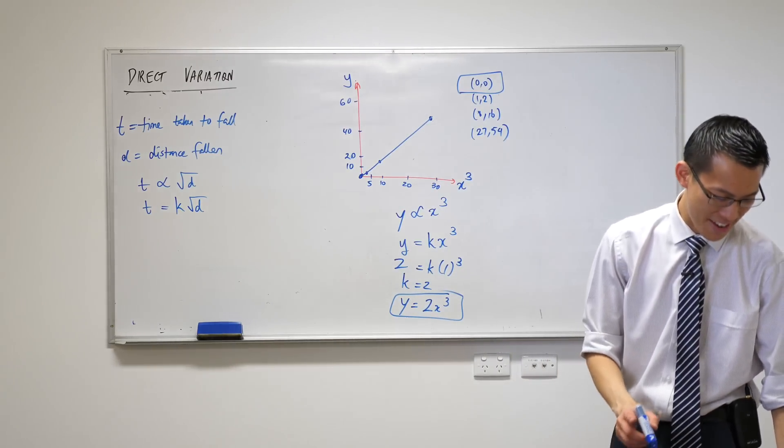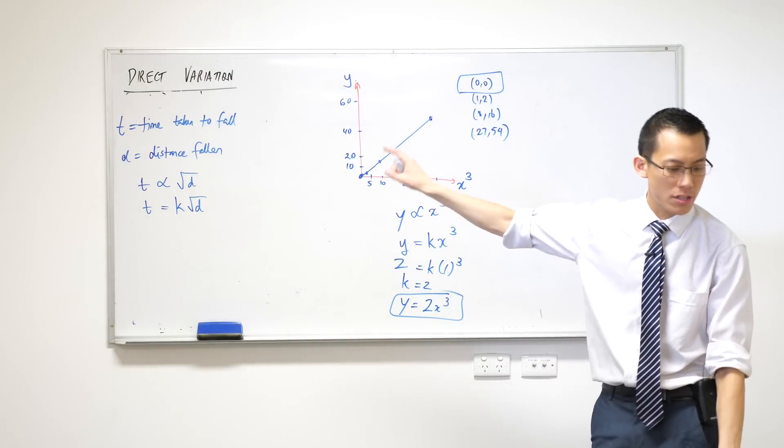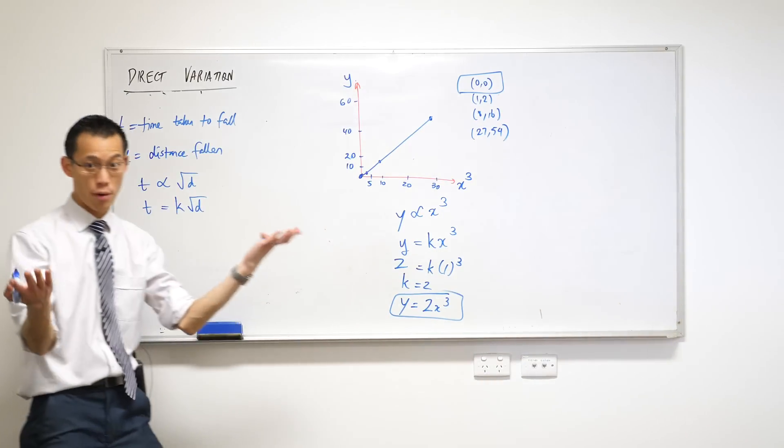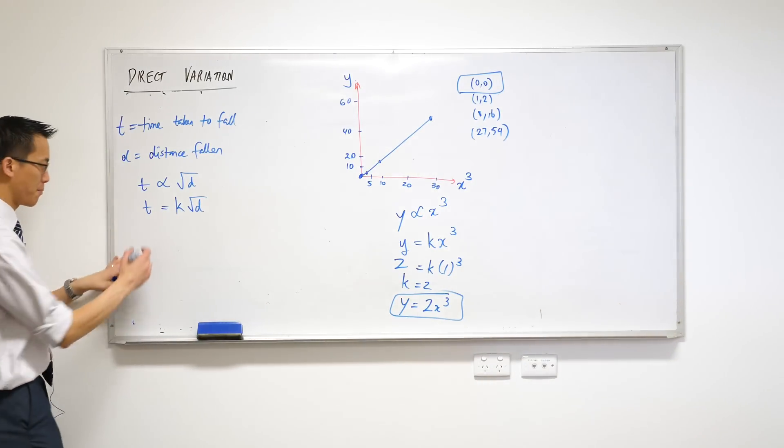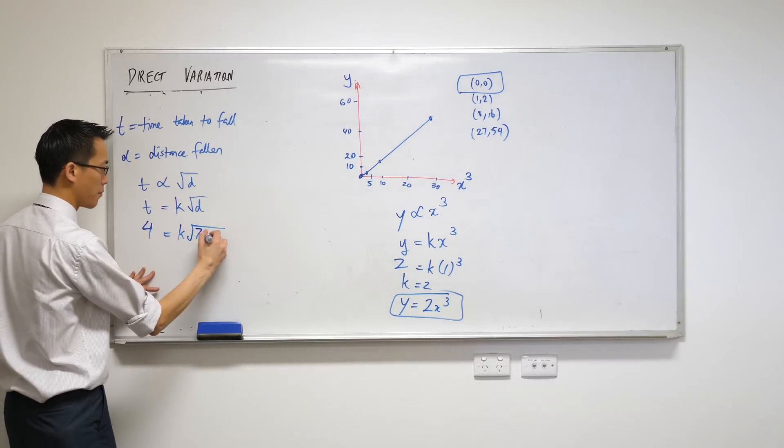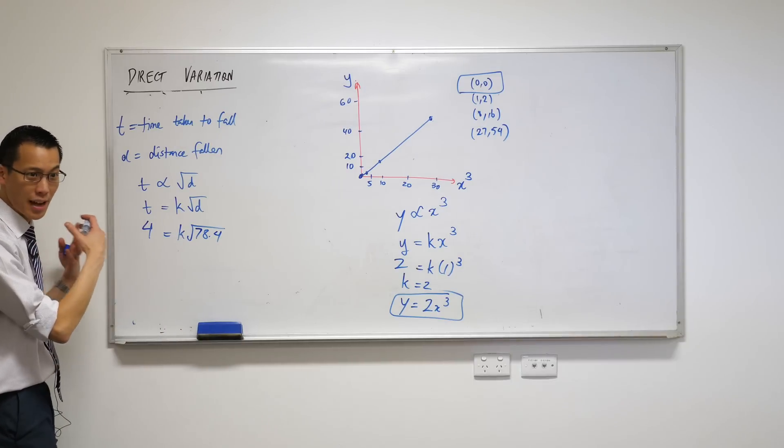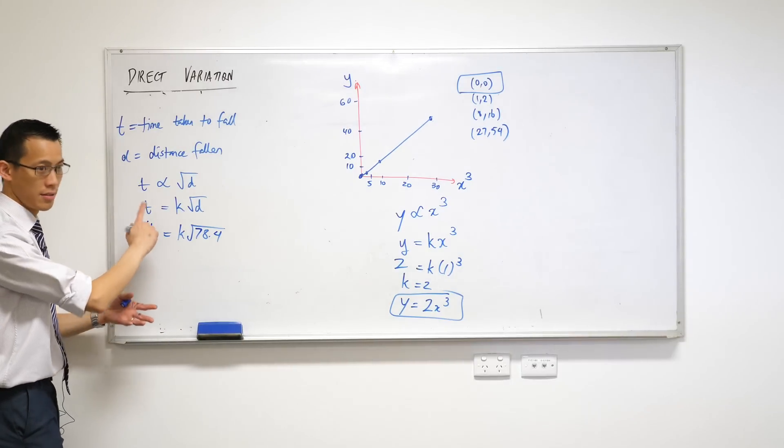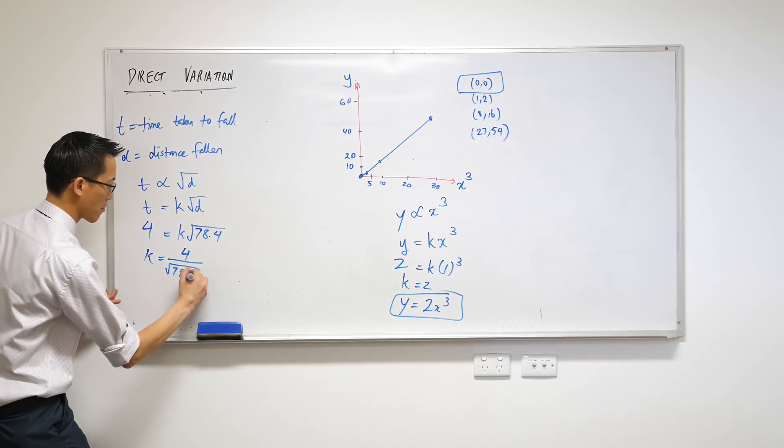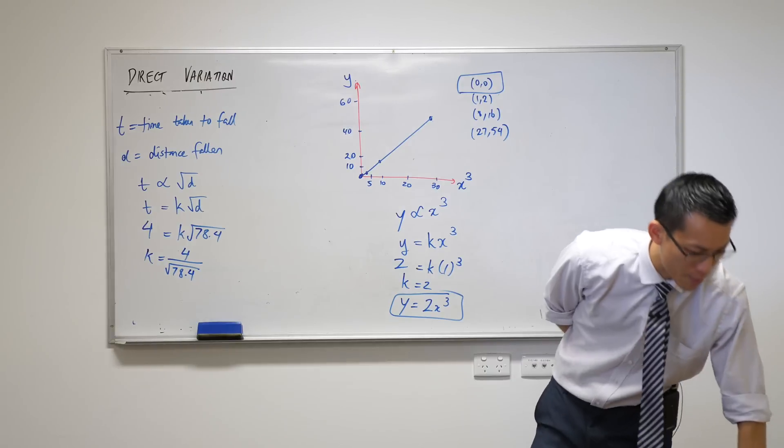So now to find out what k is, because I'm gonna need that to actually answer the question, I use the data that's been provided. Four seconds matches up with 78.4 meters. So seconds goes in for time - 4 - and 78.4 goes in for my distance. From here I just want k, so I'm going to divide both sides by the square root of 78.4. You don't need to evaluate that; you can just leave it there and use it like that.